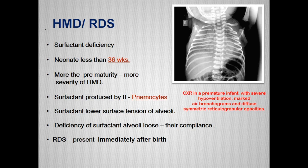A few important points: HMD is caused by surfactant deficiency, common in neonates less than 36 weeks gestation — the greater the prematurity, the greater the severity of HMD. Surfactant is produced by Type II pneumocytes. Its role is to lower the surface tension of the alveoli. Deficiency causes alveoli to lose compliance, remaining collapsed, and clinically RDS presents immediately after birth.